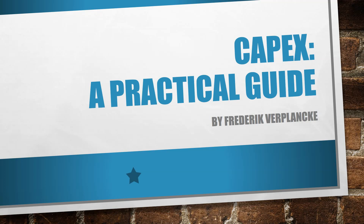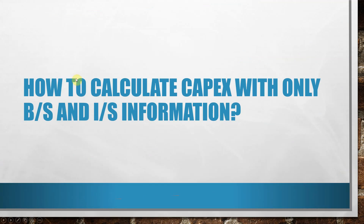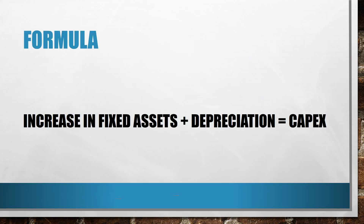In this video I would like to show you how you can calculate capital expenditures by only using balance sheet and income statement information. You might need this, for example, to calculate the free cash flows of a company. The formula to do this is rather simple: you just take the increase in fixed assets and you add depreciation.